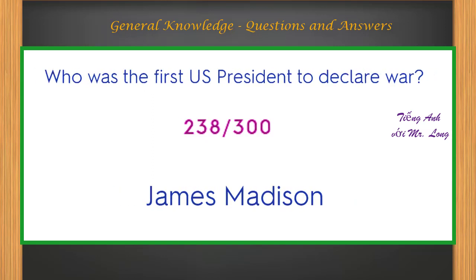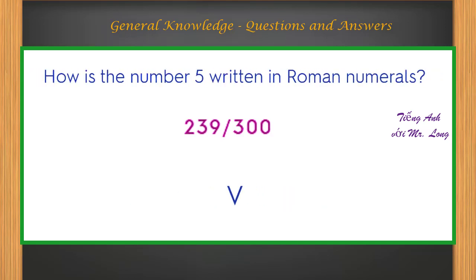Who was the first U.S. president to declare war? James Madison. How is the number 5 written in Roman numerals? V.